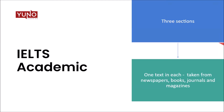In the IELTS academic reading test, you also get three sections, but in each section there is one long passage of around 900 words. The text is taken from newspapers, books, journals, and magazines, so it is academic in nature. The vocabulary used in the academic reading text is also more difficult compared to the IELTS reading test for general training students.